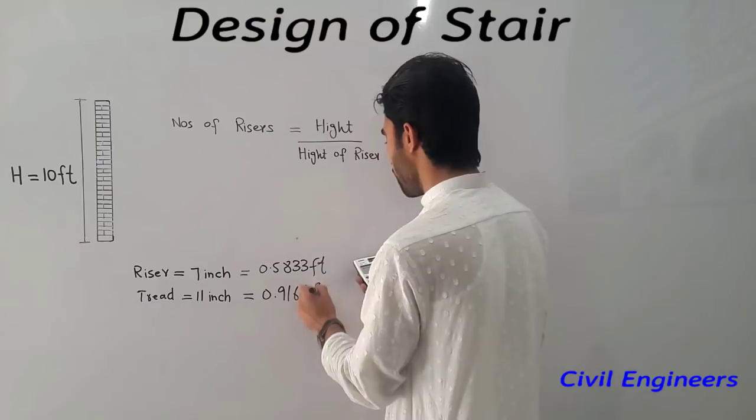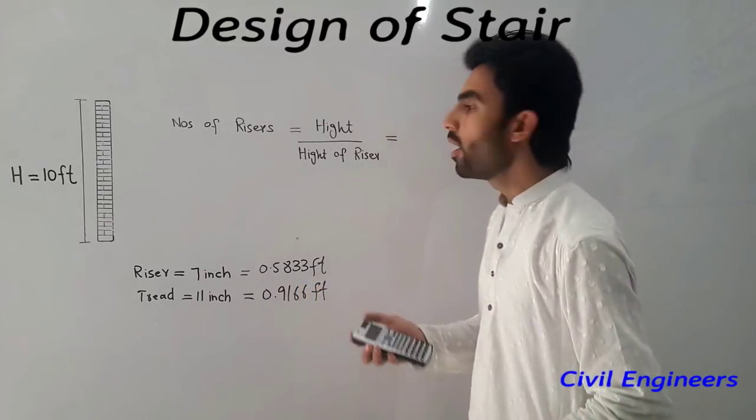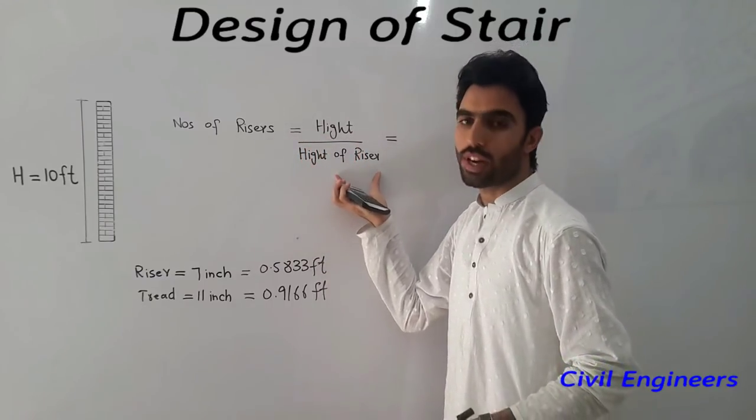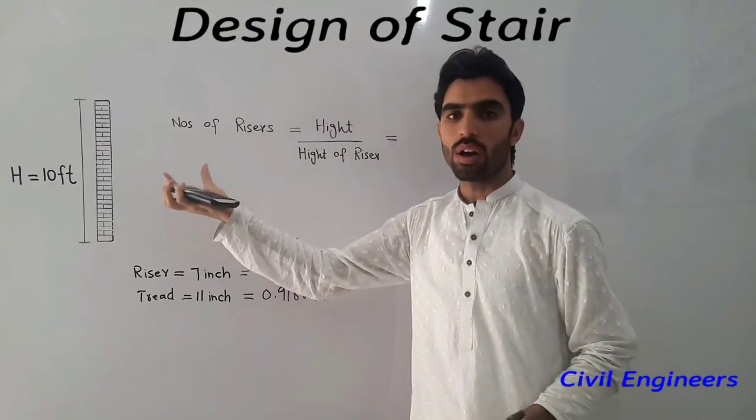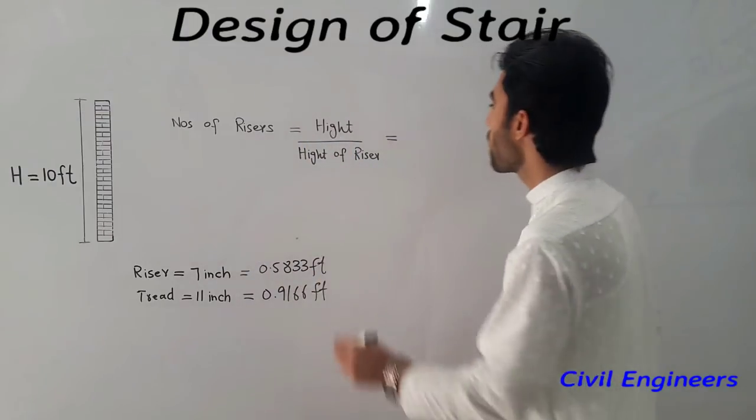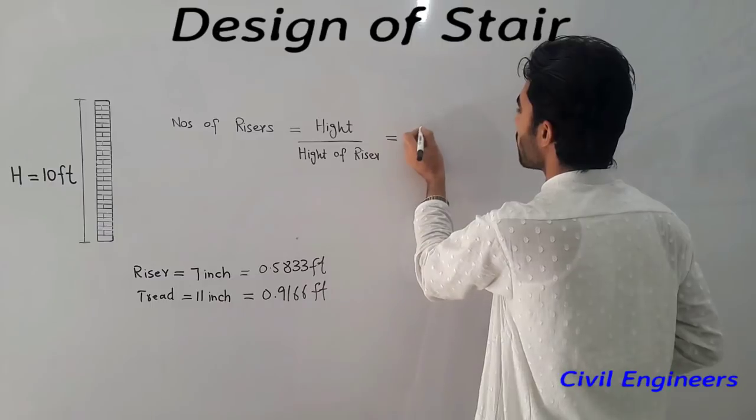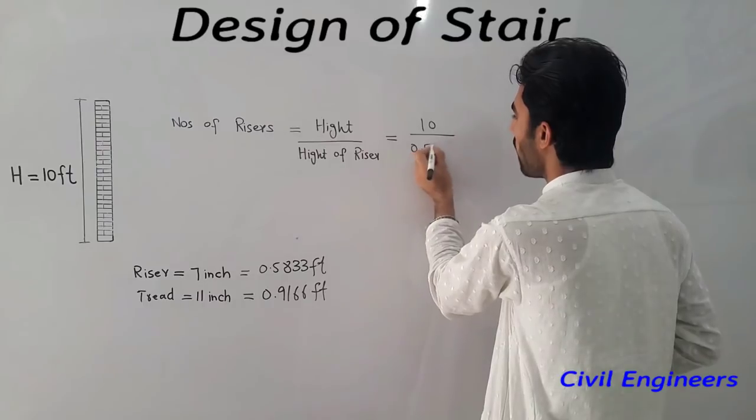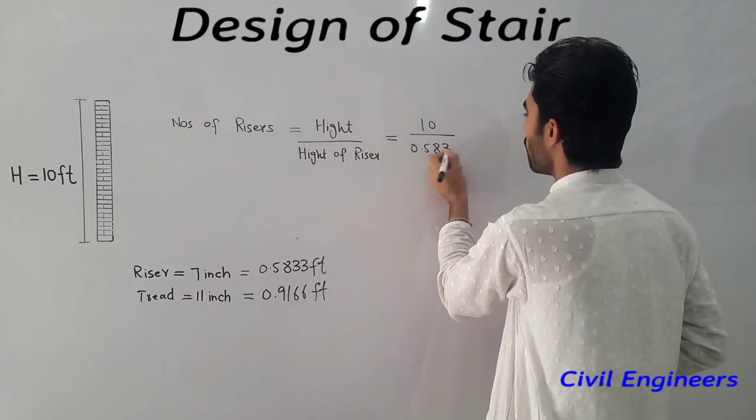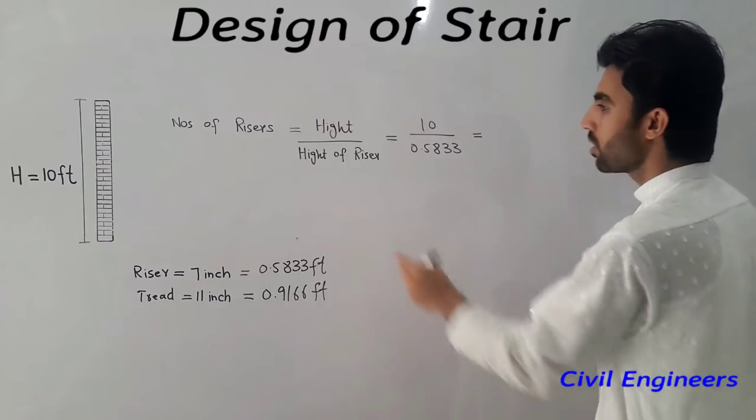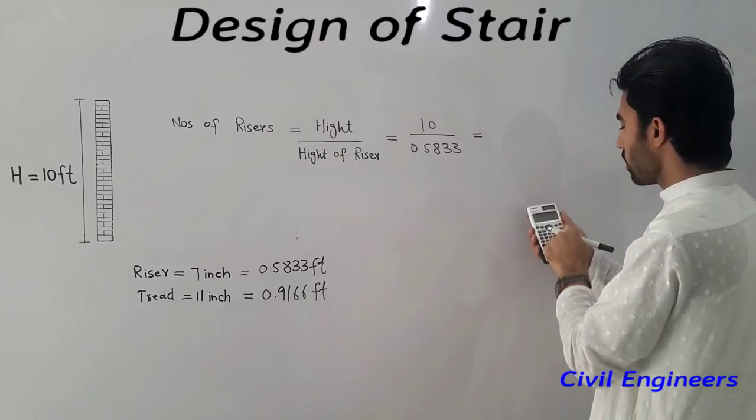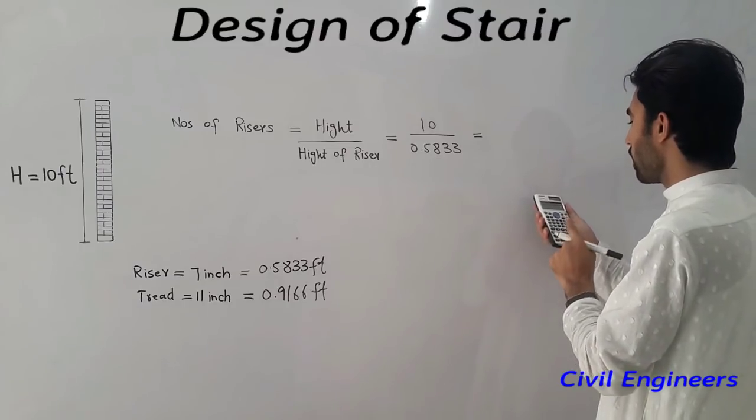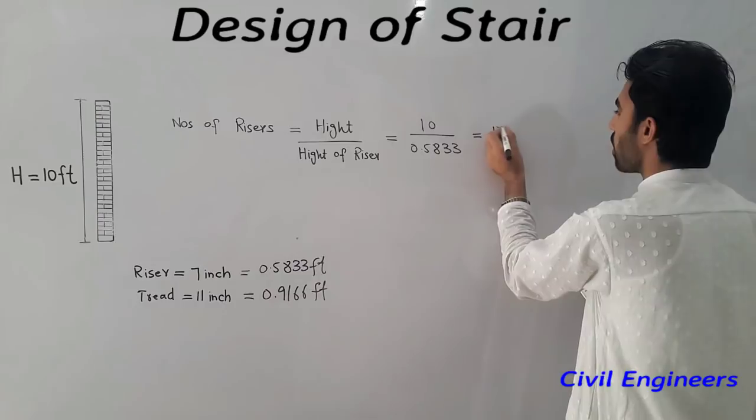So now, 10 feet divided by 0.5833 feet, it will come 17.14 numbers, say 17 numbers. So this is the easy way to find out the number of risers.